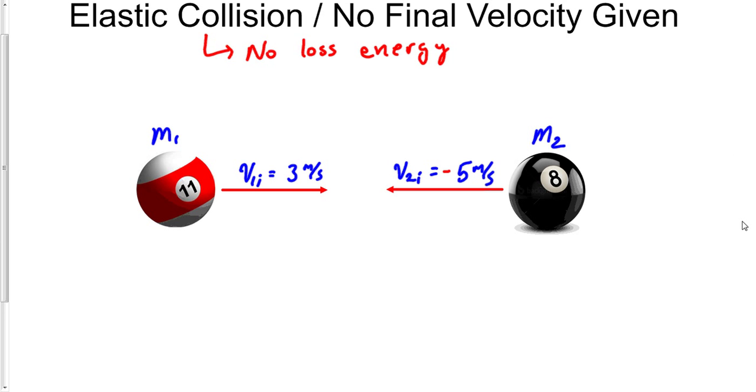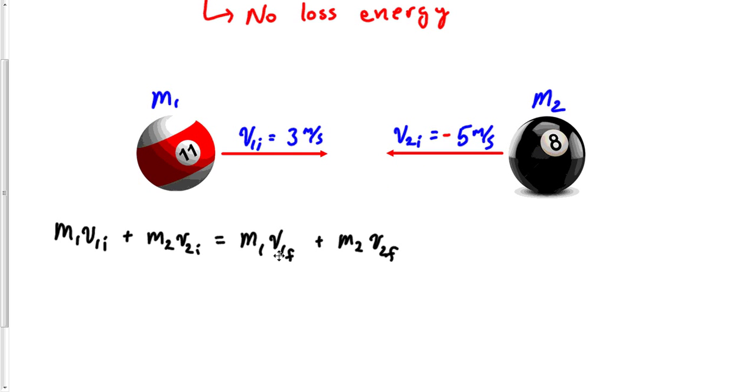If you had matching masses it'd be awesome because the masses would cancel out. Let's just go straight for the problem. Here we go: m1 v1 initial plus m2 v2 initial equals m1 v1 final plus m2 v2 final. There's our equation and if these masses are the same it becomes beautiful. All the masses would cancel out.